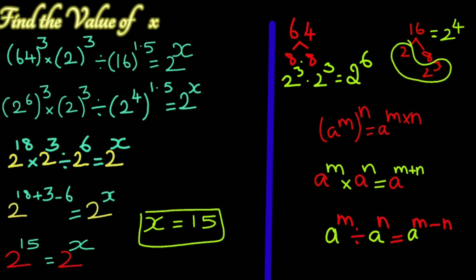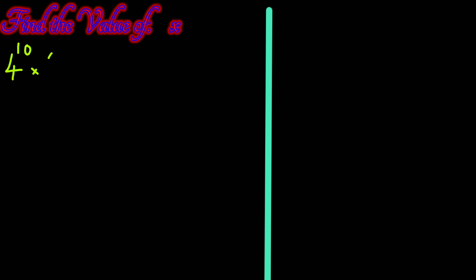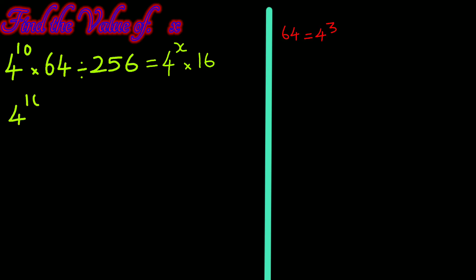Find the value of x when 4 to the power 10 times 64 divided by 256 equals 4 to the power x times 16. To find the value of x, write down the common base as 4. We have 4 to the power 10, and 64 as 4 cubed, divided by 256 which is 16 times 16.